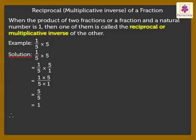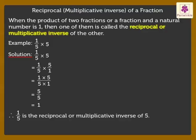Thus, we conclude that 1 upon 5 is the Reciprocal or Multiplicative Inverse of 5.